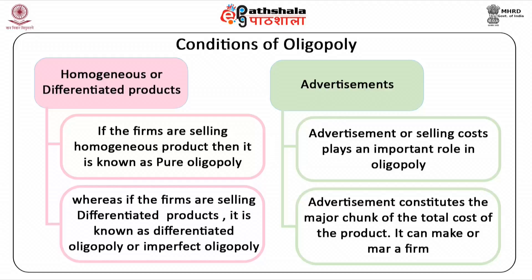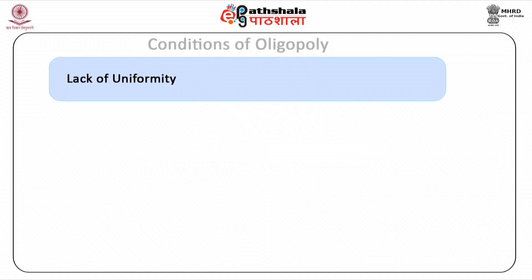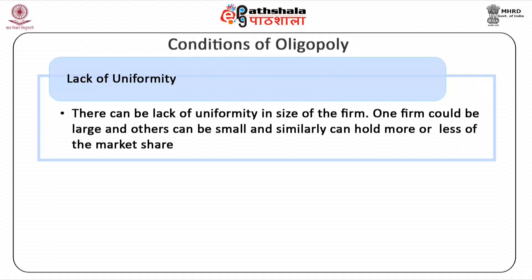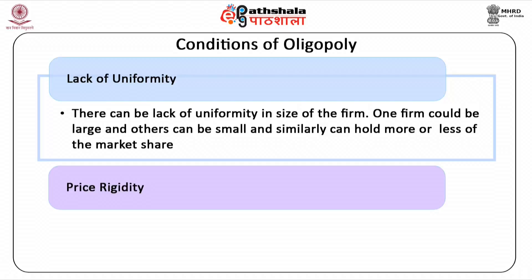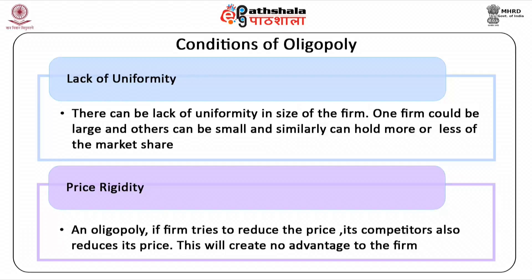Advertisement can make or mar a firm, so for handling cut-throat competition or for attracting consumers, advertising is necessary in oligopoly. Fifth, lack of uniformity. There can be lack of uniformity in size of the firm — one firm could be large and others can be small, and similarly can hold more or less of the market share. Sixth, price rigidity. In an oligopoly, if a firm tries to reduce the price, its competitors also reduce their price, creating no advantage to the firm. If the firm increases the price, its competitors do not do so; as a result, the firm loses its consumers. Thus, in both situations, the firm is likely to lose, and there remains price rigidity.